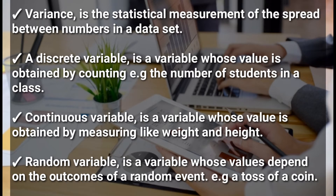A discrete variable is a variable whose value is obtained by counting. For example, the number of students in a class can be found by just counting. A continuous variable is a variable whose value is obtained by measuring — it's uncountable. For example, weight: you cannot just count to know your weight, you have to measure it. So a discrete variable is counted and a continuous variable is measured.